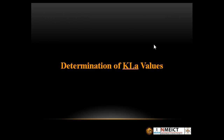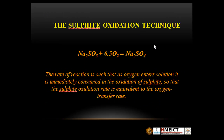Determination of KLA value. The first method to determine the KLA value is the sulphide oxidation technique — this is the oldest one. Using this formula, the rate of reaction is such that as the oxygen enters solution, it is immediately consumed in the oxidation of sulphide, so that the sulphide oxidation rate is equivalent to the oxygen transfer rate.